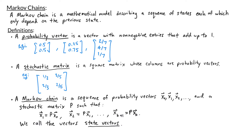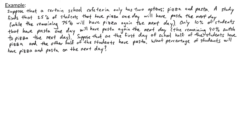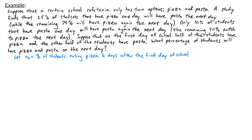Now let's look at an example. Suppose that a certain school cafeteria only has two options: pizza and pasta. A study finds that 25% of the students that have pizza one day will have pasta the next day, while the remaining 75% will have pizza again. The study also finds that 10% of students that have pasta one day will have pasta again the next day, while the remaining 90% will switch to pizza. Suppose that on the first day of school, half of the students have pizza and the other half have pasta. We're asked to find what percentage of students will have pizza and pasta on the next day. Let a_k be the percentage of students eating pizza k days after the first day of school, and b_k be the percentage of students eating pasta k days after the first day of school.